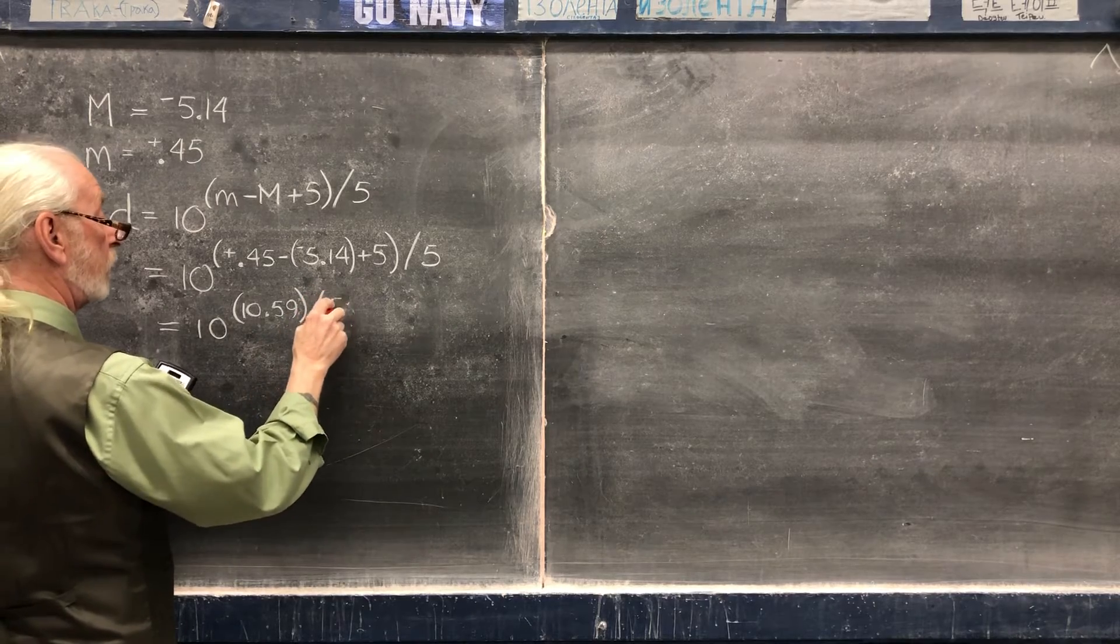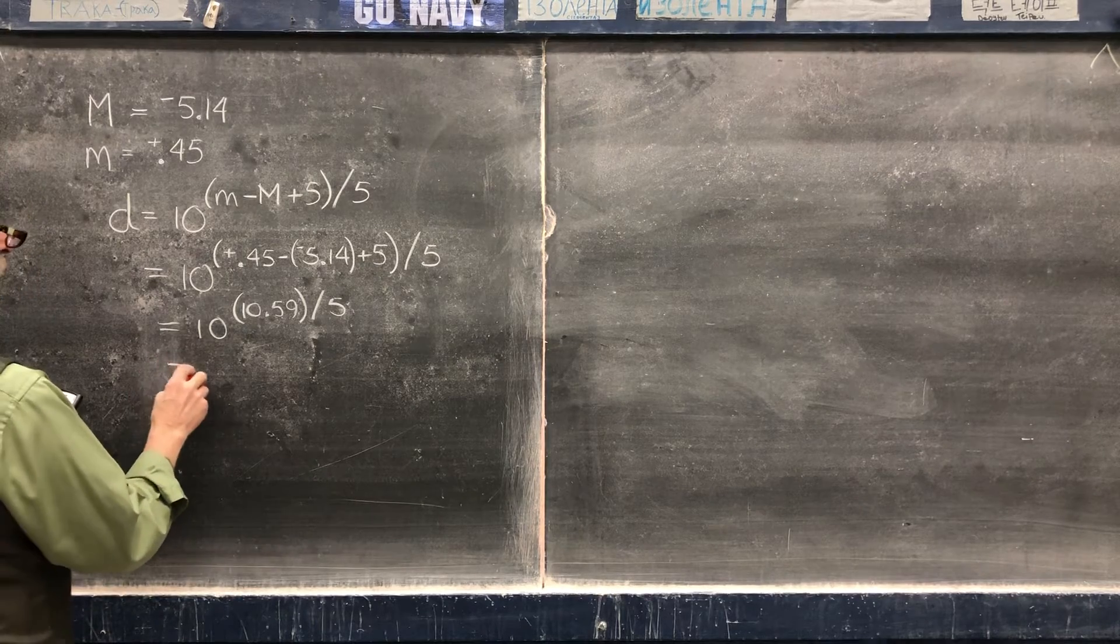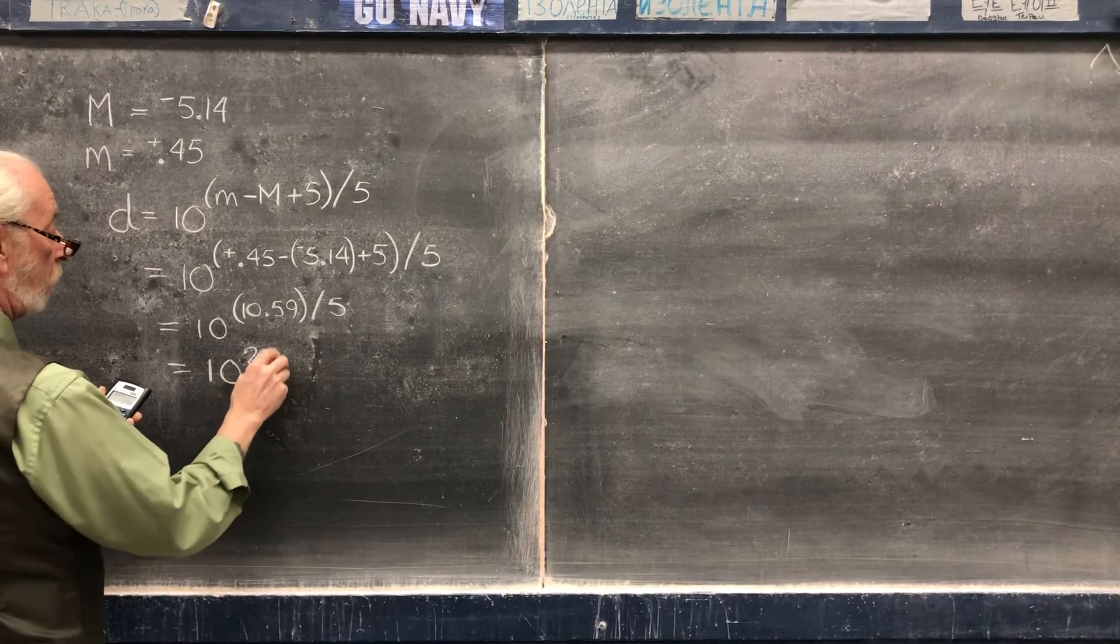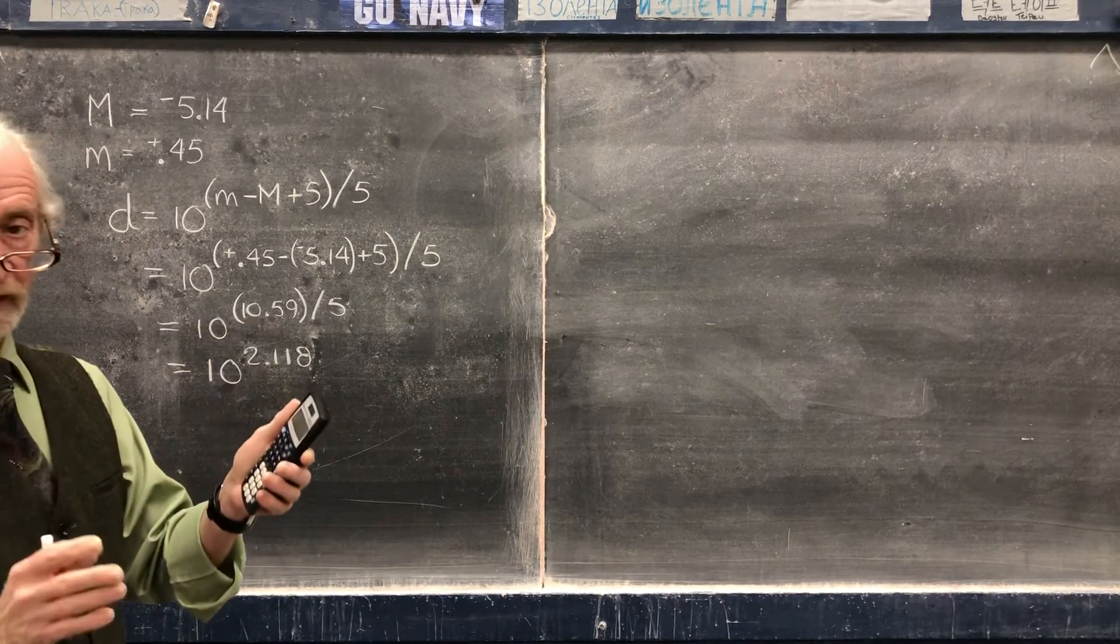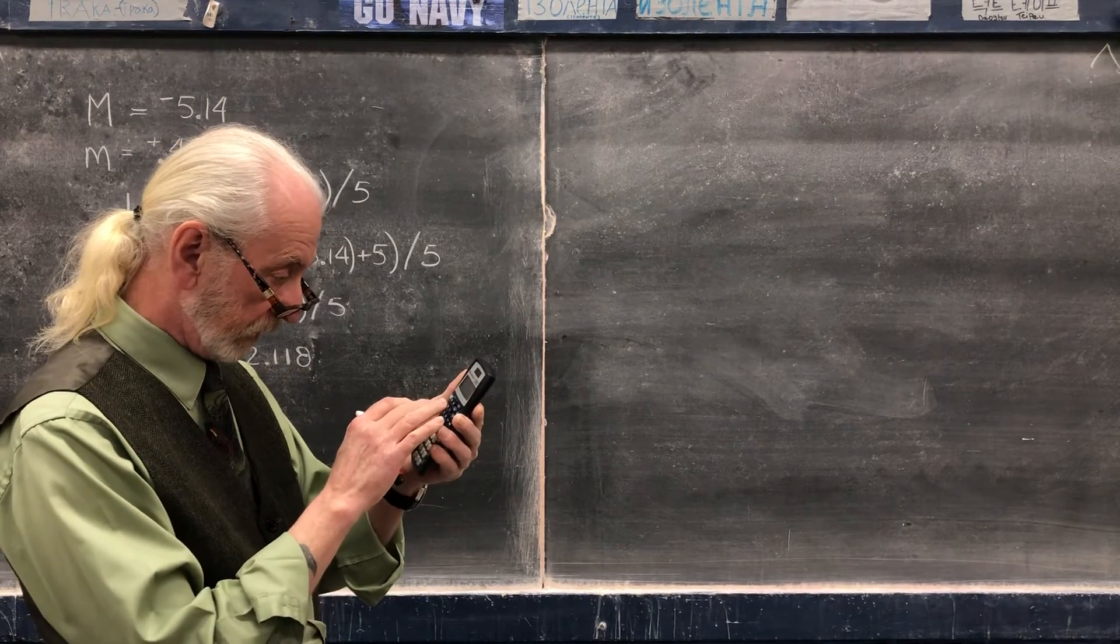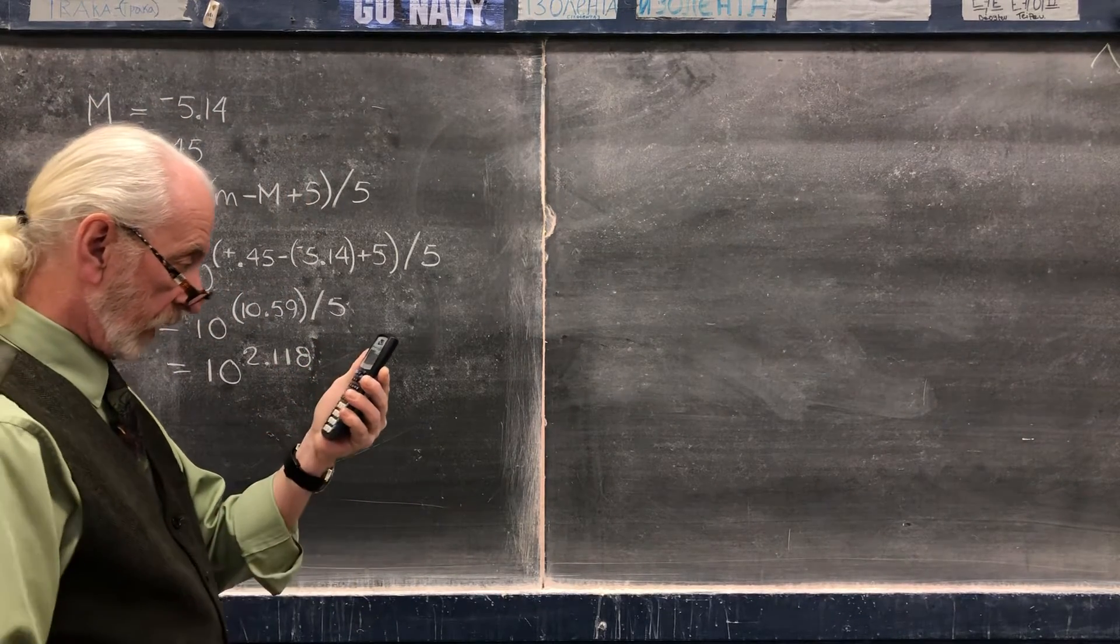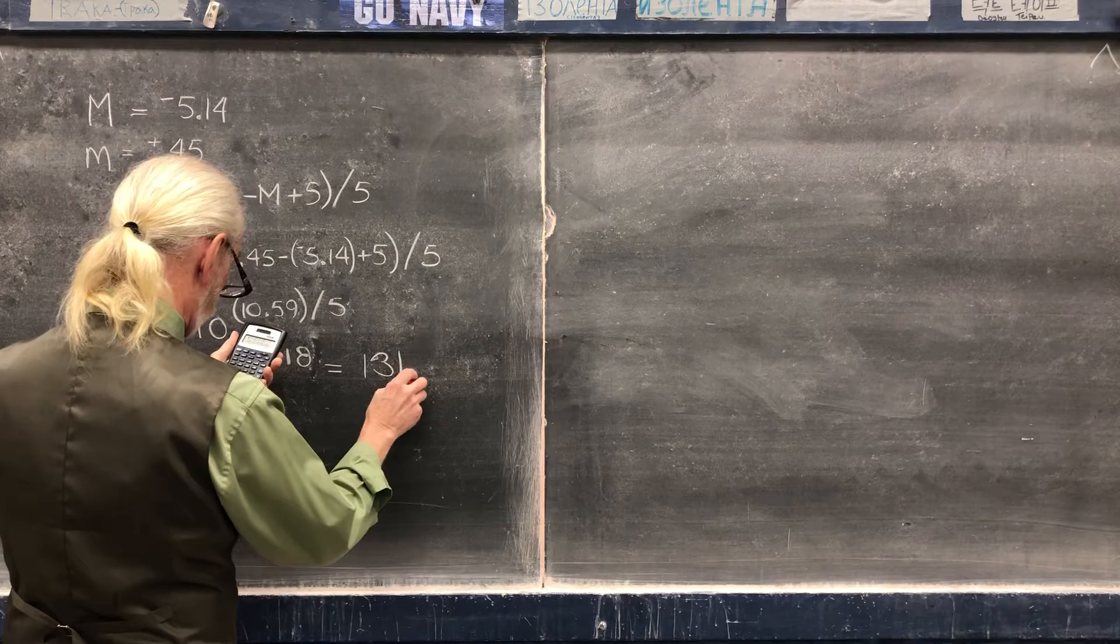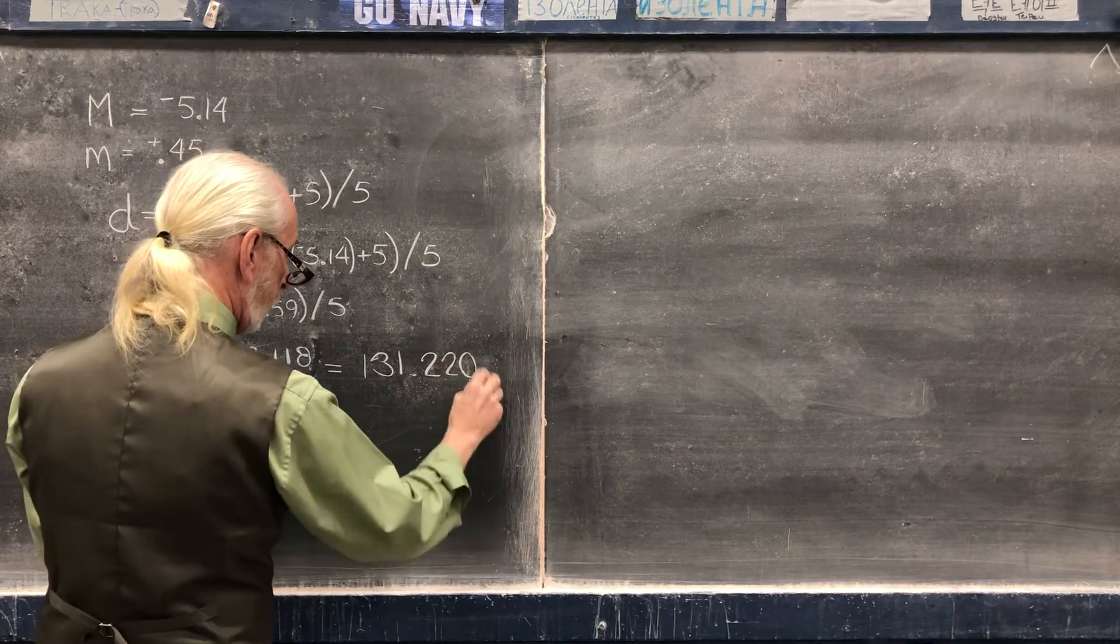Divide by 5. That gives me 10 to the 2.118. All right, so now I'm going to go to my second, or reciprocal log function on the calculator. Second, 10 to the x, plug in 2.118. And I got 131.220 parsecs.